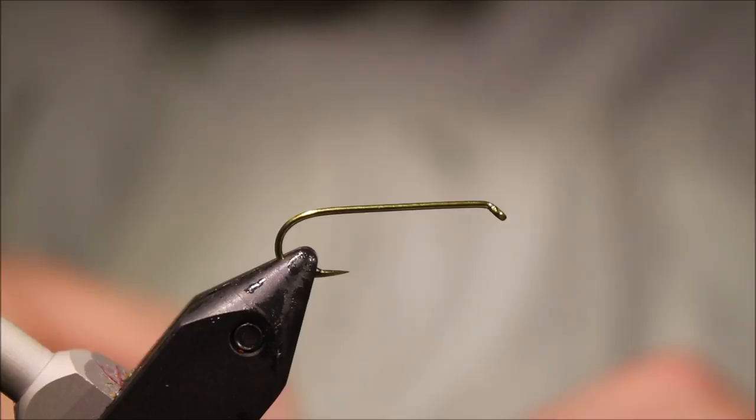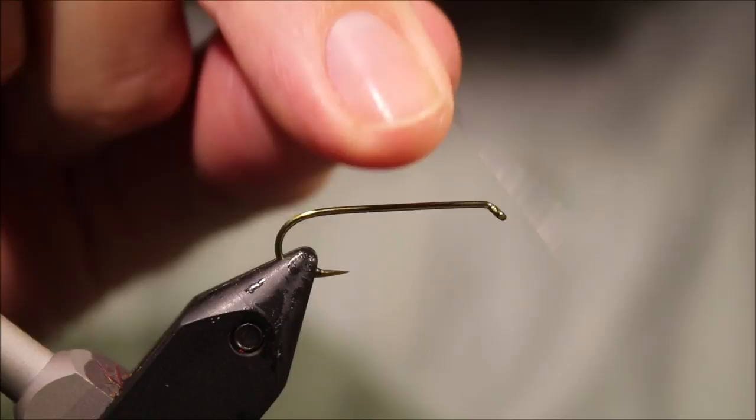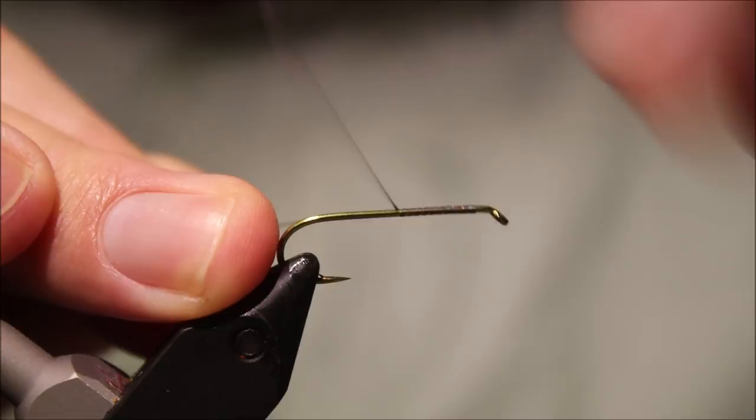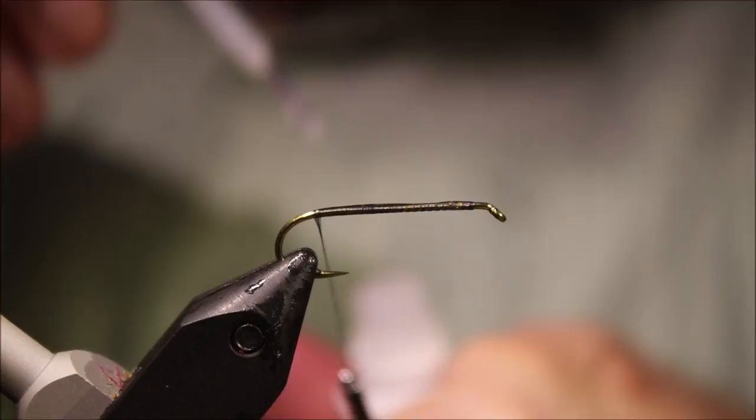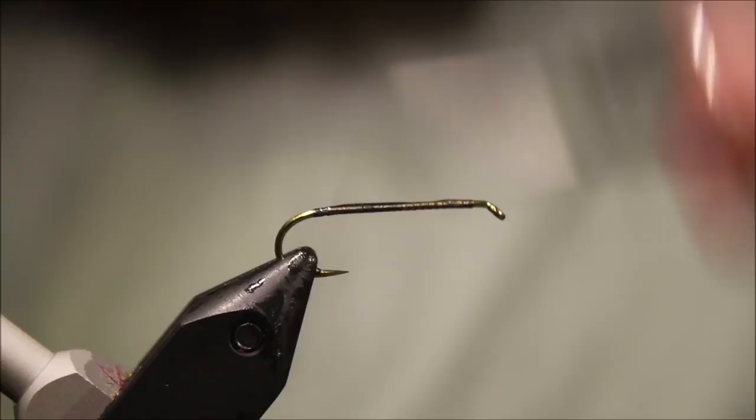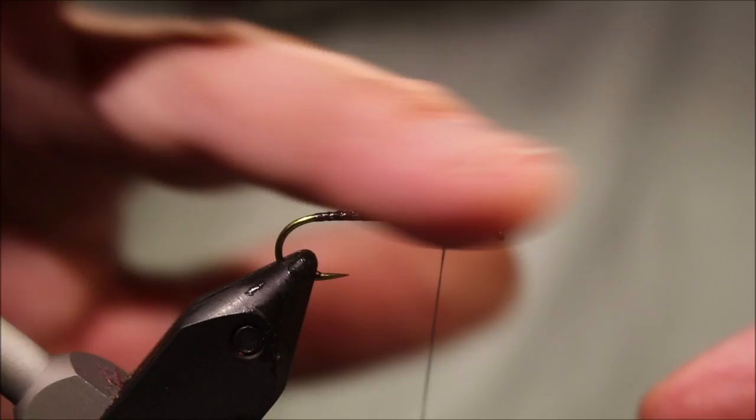So I've got my hook in my vise, it's a size 8 TMC 5263, the nymph hook. I like the heavier hook than the hopper hook that they make. I think the hopper hook is too light for these big foam flies. They often land on their back or land on their side without the heavier hook to flip them. Plus that splat I think can help and you get that a bit better with a heavier hook.